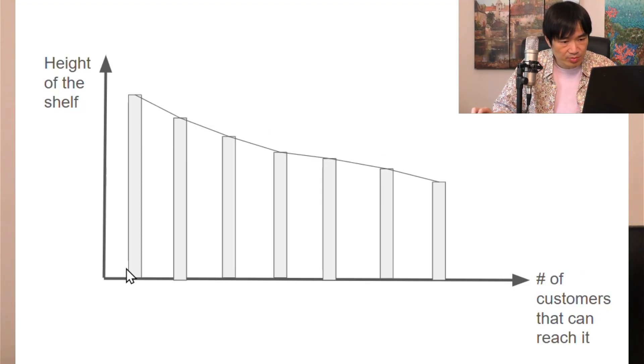So let's line up all the customers by the height they can reach from the tallest to the shortest. So when the shelf is this high, only one customer can reach it. And when the shelf is this high, about four customers can reach it. So obviously the curve is going down because the lower the shelf, the more customers can reach it.